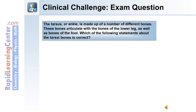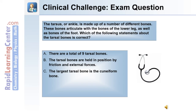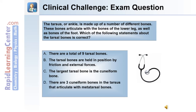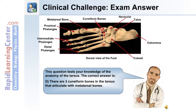Clinical challenge exam question: the tarsus or ankle is made up of a number of different bones that articulate with the bones of the lower leg and the foot. Which of the following statements about the tarsal bones is correct? A: there are a total of nine tarsal bones. B: the tarsal bones are held in position by friction and external forces. C: the largest tarsal bone is the cuneiform bone. D: there are three cuneiform bones in the tarsus that articulate with metatarsal bones. Or E: none of the answers are correct. The correct answer is D — there are three cuneiform bones in the tarsus that articulate with metatarsal bones.